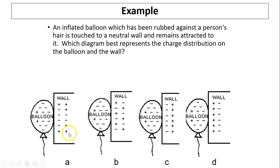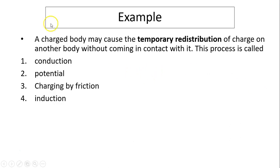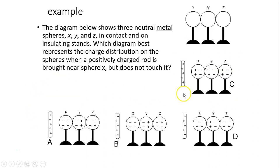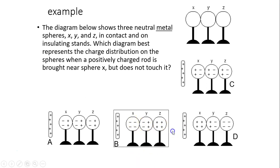Example: which diagram represents the correct charge distribution of the balloon on the wall? The balloon is negatively charged, and the wall has to be polarized, so the answer is D. Another example: a metal positively charged rod is brought near three conducting spheres. How is the charge going to distribute in the spheres? Because these spheres are conducting, electrons see no boundaries between them, so the answer is B — the electrons keep going and don't stop at a boundary.